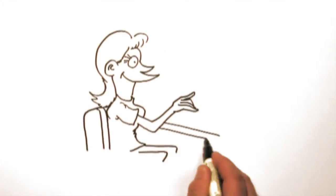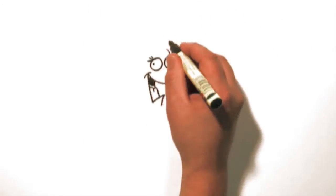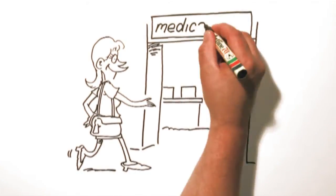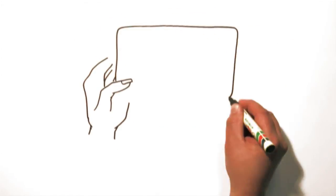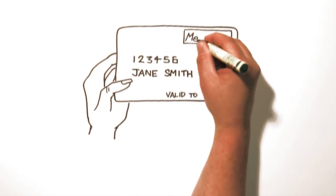Here's how it works. Register for an eHealth record online, call the eHealth record helpline, or visit any Medicare Australia service centre. For security, you'll need ID, so be sure to have your Medicare card, your personal details, and information about your last doctor's appointment.